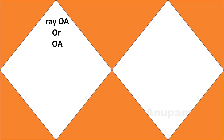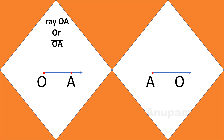Now I am going to draw ray OA. O is the starting point and A is a point on the ray. There is also another ray starting from point A where O is a point on the ray — that is ray AO. Ray OA and ray AO are not the same; both are different rays.